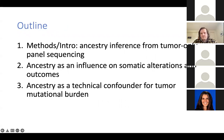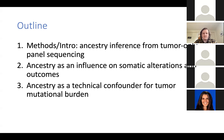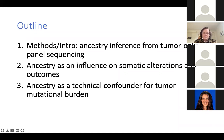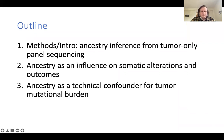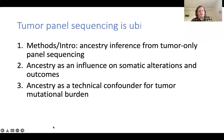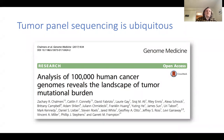The structure of my talk is: first, methods we've developed to use large-scale genomics data to understand the influence of genetic ancestry; then two example vignettes — one about how ancestry influences tumor evolution and clinical outcomes, and a separate point about how ancestry can be a technical confounder for diagnostics, specifically for tumor mutational burden. This provides both a methodological framework and two different ways of thinking about how ancestry matters in cancer biology and diagnostic tools.